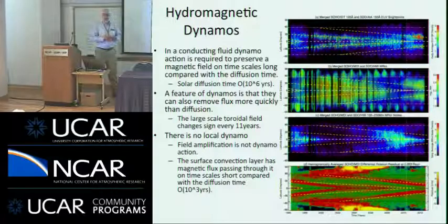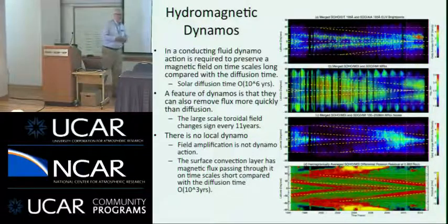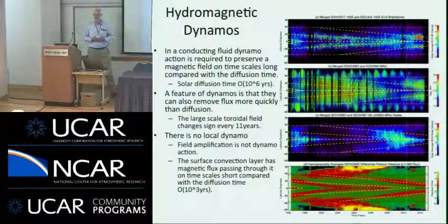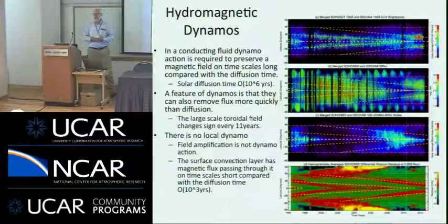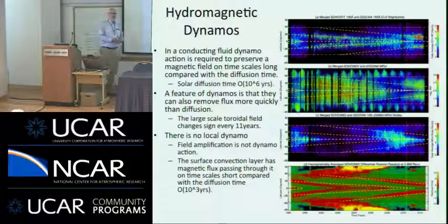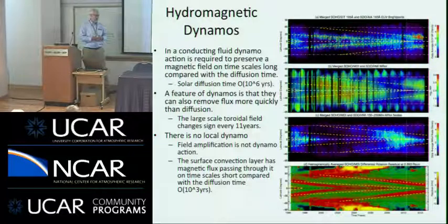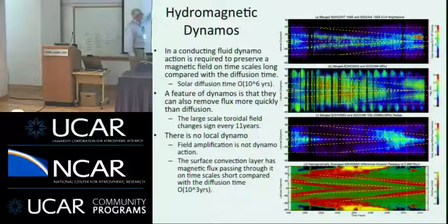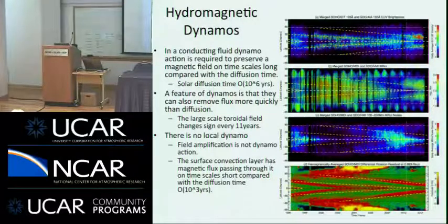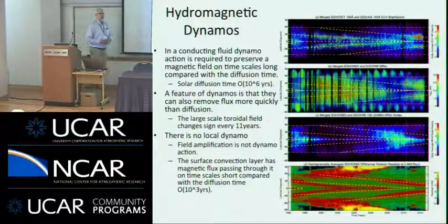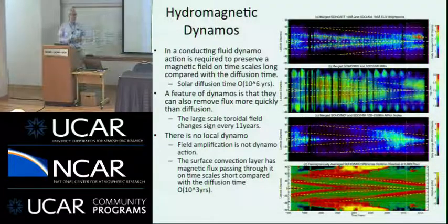The boundary conditions are complicated, and helioseismology tells us we have boundary layers at the bottom that we kind of don't understand. The shear layer at the top is even less understood than the shear layer at the bottom. We don't have models that generate those shear layers very efficiently. So we're dependent on observations to constrain our models, and also dependent on the models to elucidate what's going on.